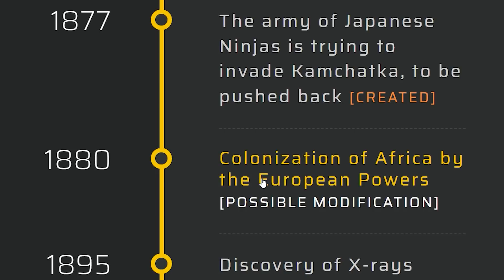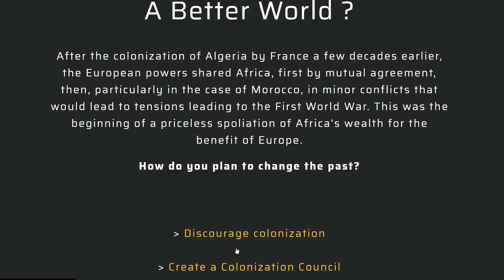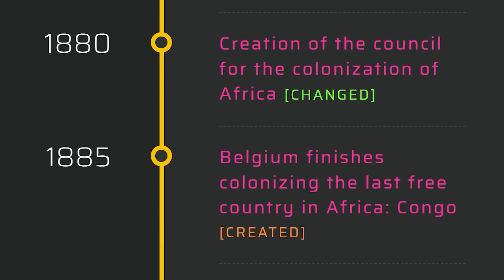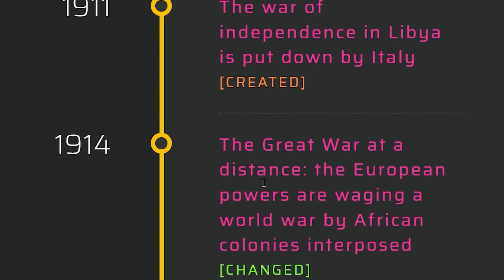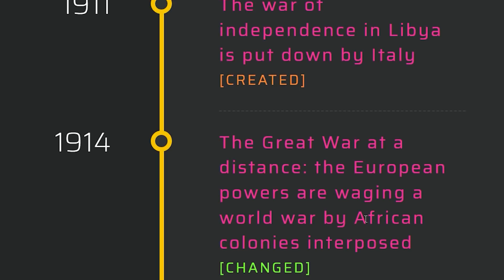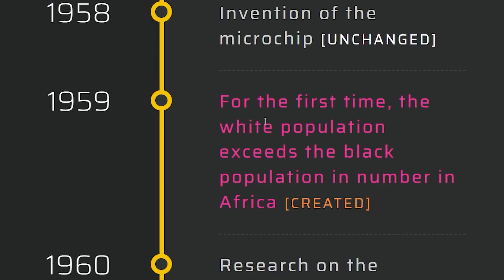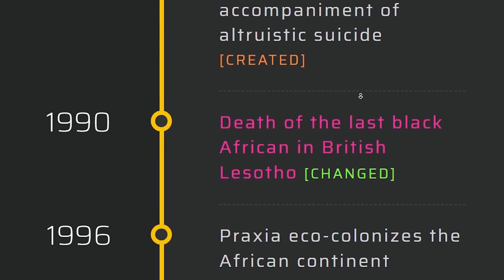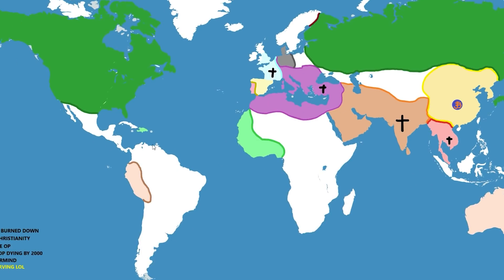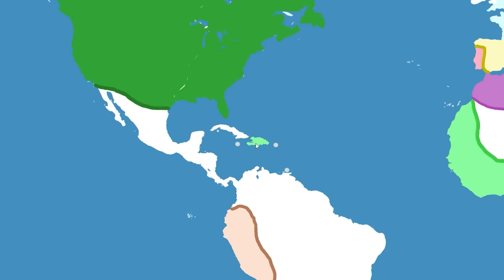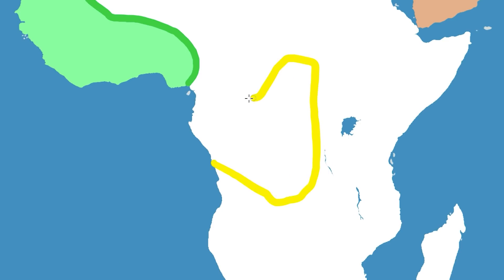We know Europe was repealed from America — let's see what they do with Africa. Create a colonization council. Belgium has now finished colonizing the last free country in Africa, the Congo. The War of Independence in Libya is put down by Italy. The Great War of Distance — European powers are waging a world war by African colonies interposed. Europe undertakes to destroy Africa. There are now more white folks in Africa. So America and Russia stopped Europe from being communist, but they didn't stop Europe from destroying Africa. That is unfortunate.